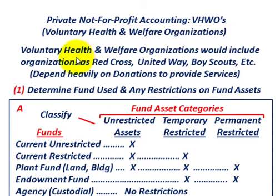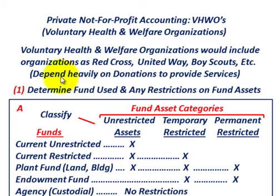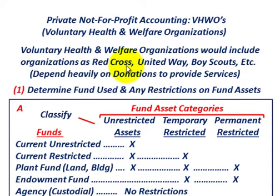VHWOs include organizations such as the Red Cross, the United Way, Boy Scouts, Girl Scouts, and so forth. When talking about these types of organizations, they depend heavily on donations and contributions to provide their services — including donations of volunteers' time as well as donations of money and other resources.